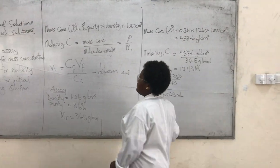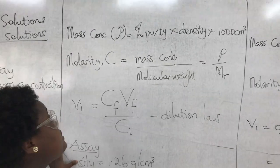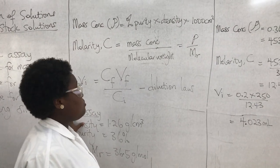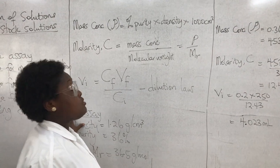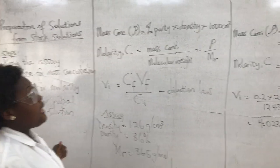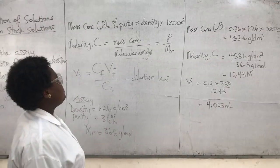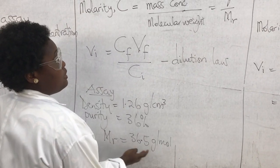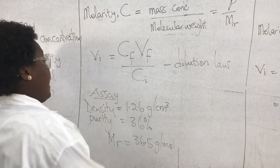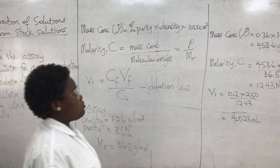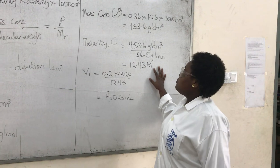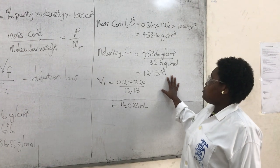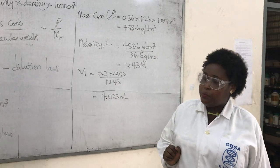Now step 3: calculate the molarity. The formula is: molarity (C) = mass concentration ÷ molecular weight. We already have mass concentration as 453.6 g/dm³ and molecular weight as 36.5 g/mol from the question. Dividing gives a molarity of 12.43 mol/dm³. So the molarity of the HCl stock solution is 12.43 molar.